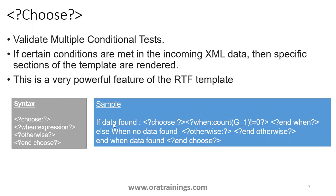If you observe the sample, like in this one, if you want to consider when data is there you want to do something, and when data is not there you want to do something else — you can write logic like this using choose. When count of G1 (G1 is one of the sample groups) and if the number of records in G1 are greater than zero, that if condition is satisfied. And after that, if you want to have an else logic, you can mention otherwise, then the otherwise start and end. Similarly, end when, and finally you need to close the choose condition using end choose.